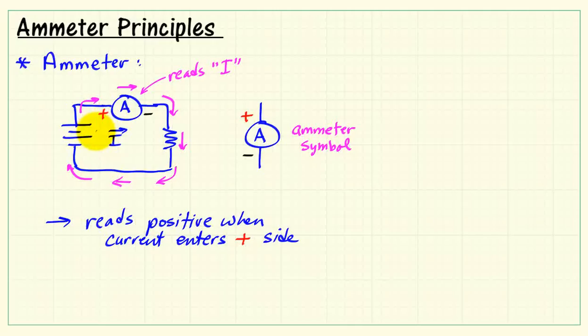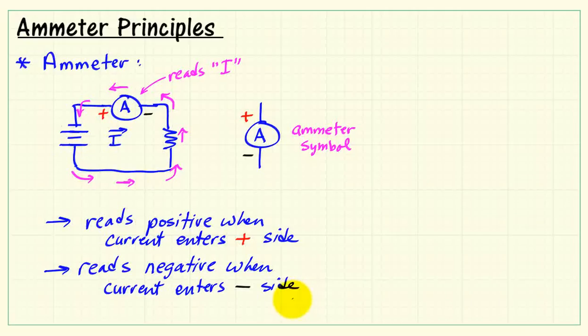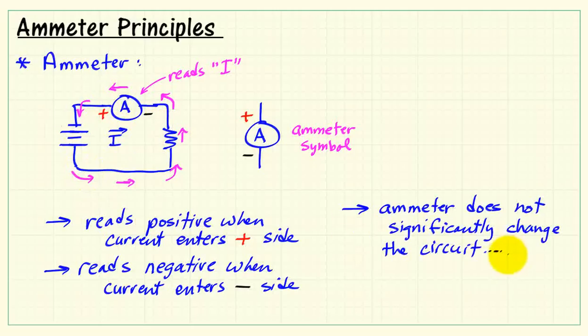If we were to flip the battery polarity around, causing the current to circulate in the other direction, in this case directing current into the negative side, then the meter reads negative. So current has both a value and a direction.